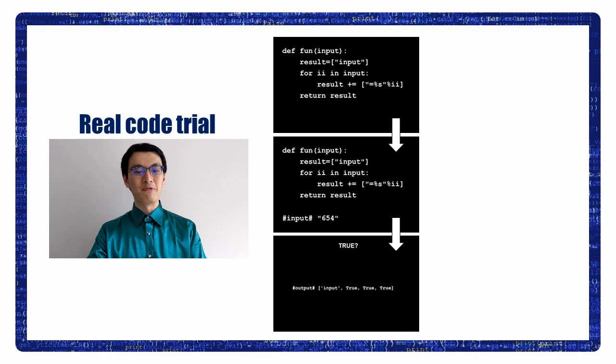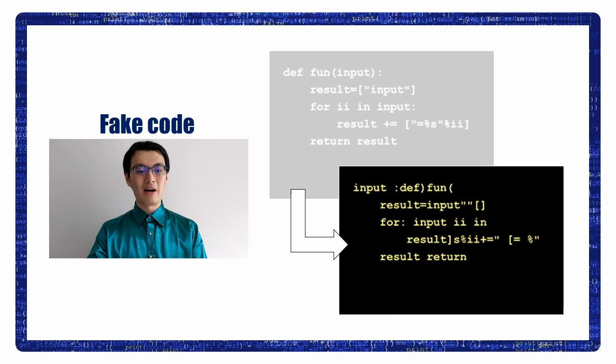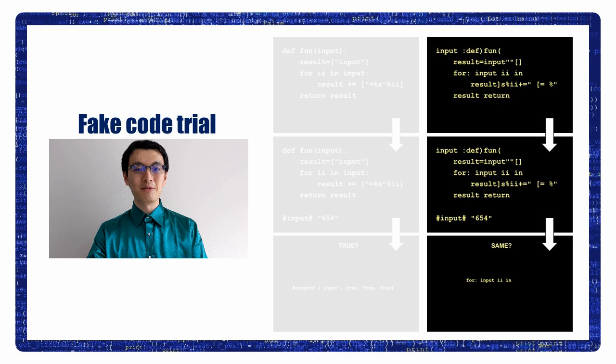In a fake-code trial, participants saw a fake-code function, which was a real function scrambled at the level of words and symbols. Here's an example. Participants were required to memorize this fake function and answer whether a single line of fake code came from this fake function.